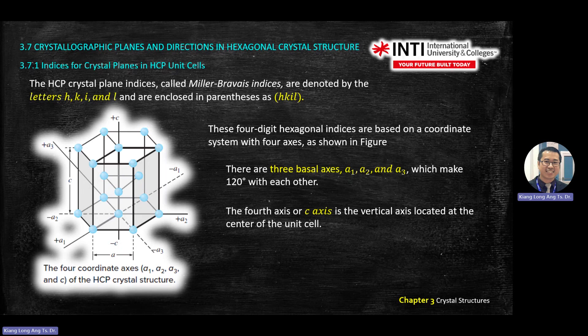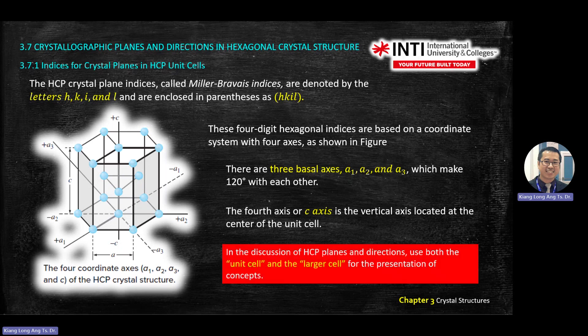Another axis will be C. C will be the height from the base to the top plane. For HCP, remember, we calculate the unit cell first. We use the paradigm cubic highlighted by the bold line here. We calculate an individual cubic — you can call it a cubic — that's our paradigm. Then we multiply by three to become a large cell. This is the procedure when we analyze for HCP.